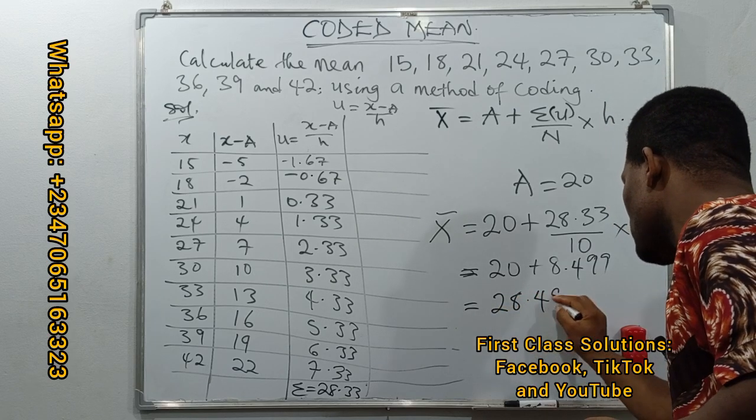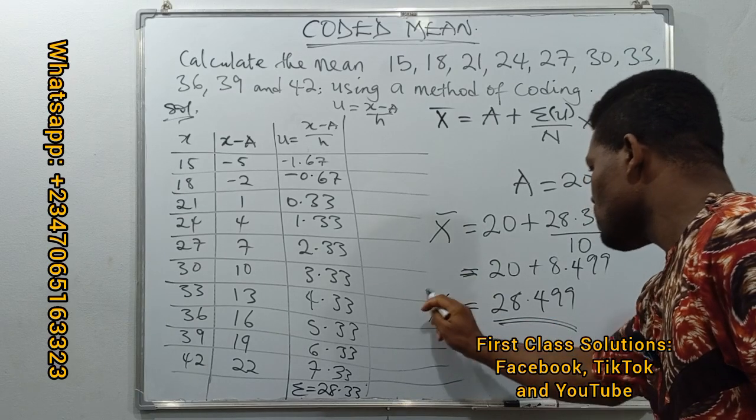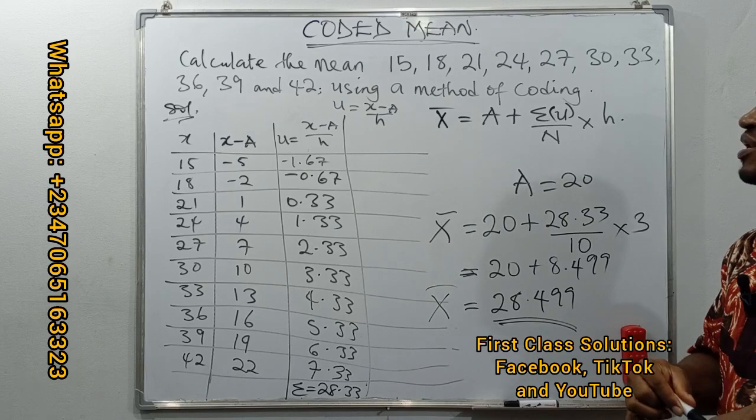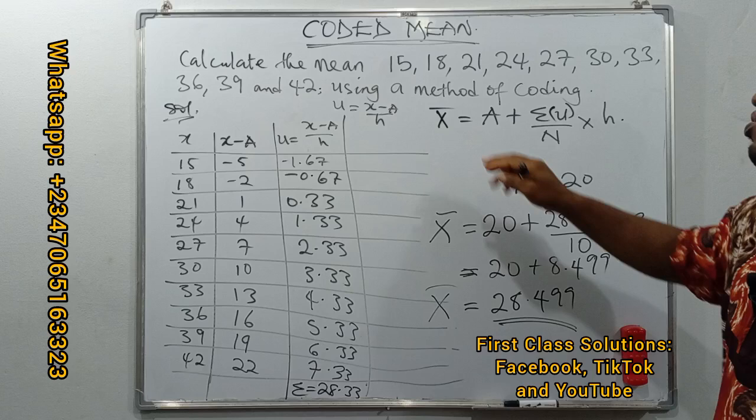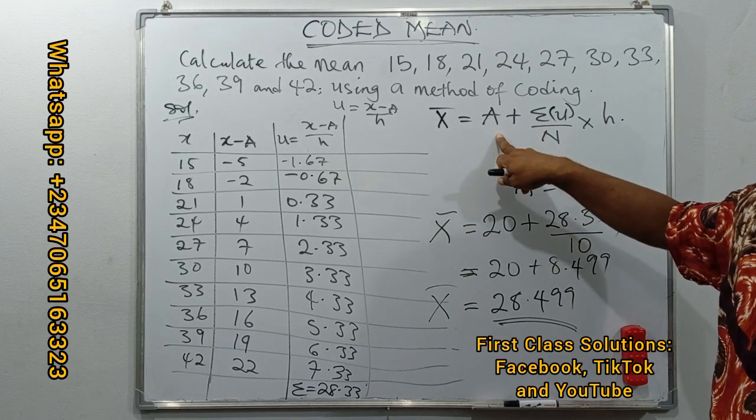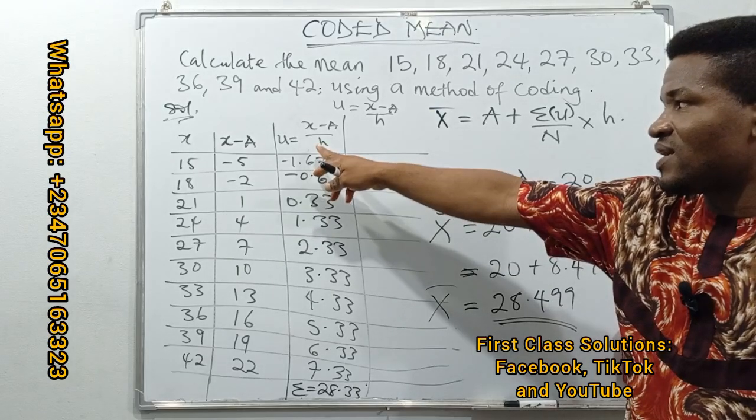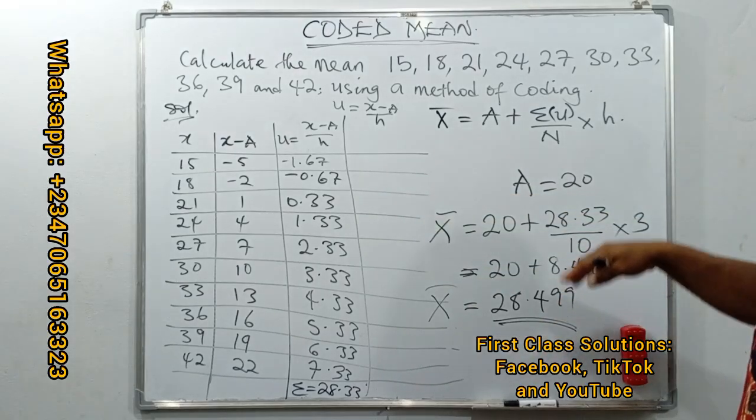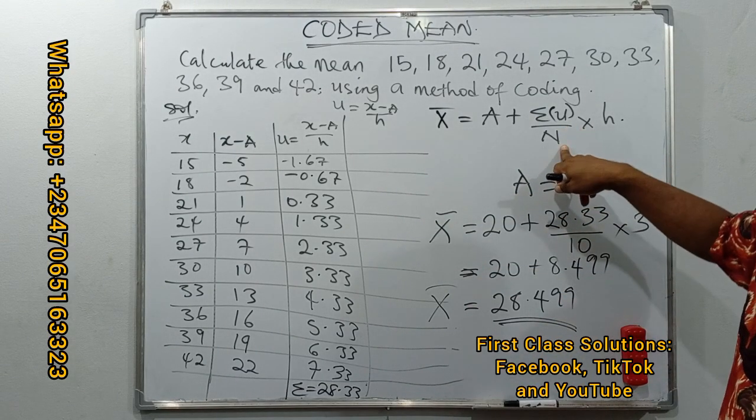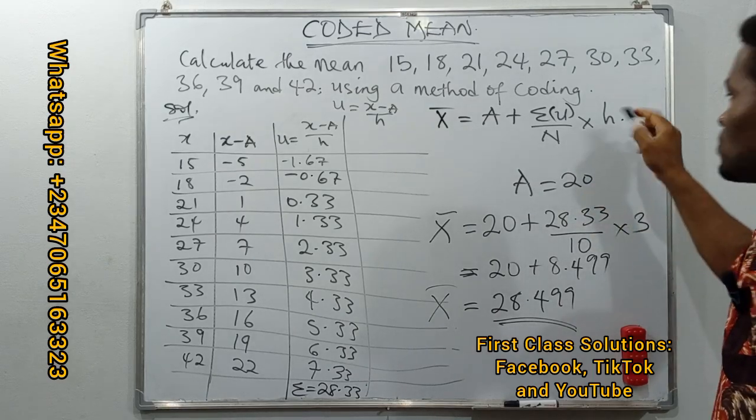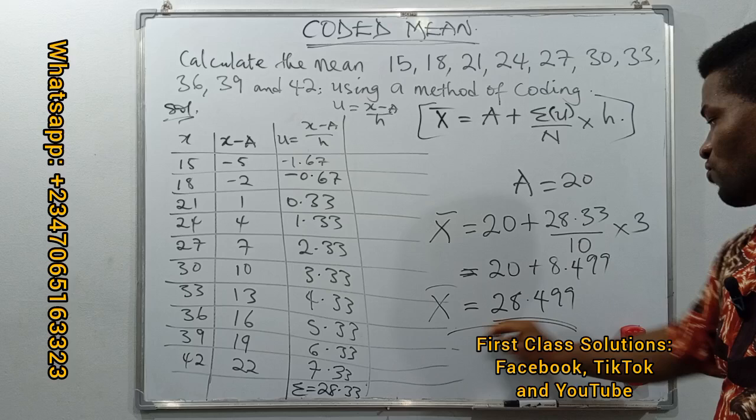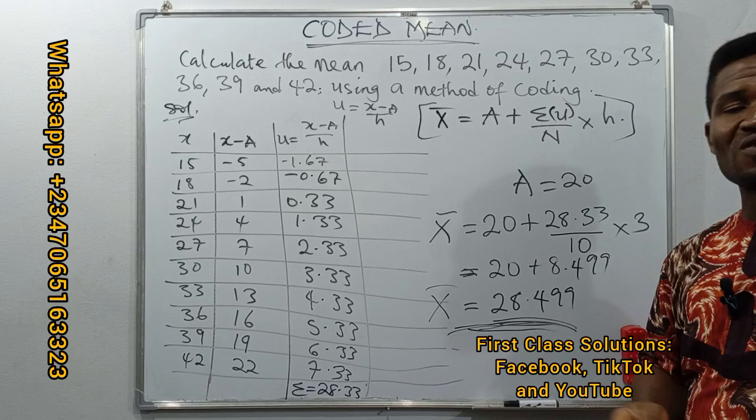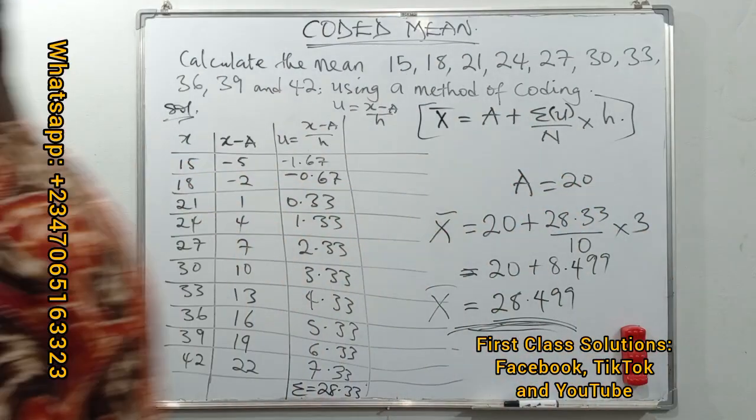So calculating the mean of this distribution by method of coding is 28.499. Remember what we did by inserting the formula and breaking it down to get the coding factor. Once that was obtained, we inserted it into the formula and this is what we got as the final answer being 28.499. Thank you very much for watching to this point, and do well to share this video to your friends as it might be of very good help to them. God bless you.